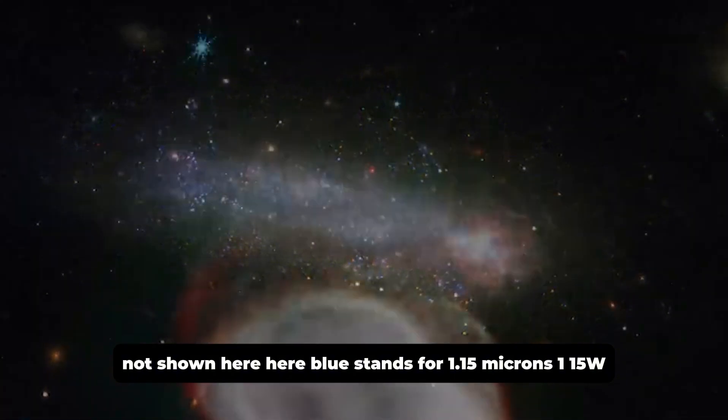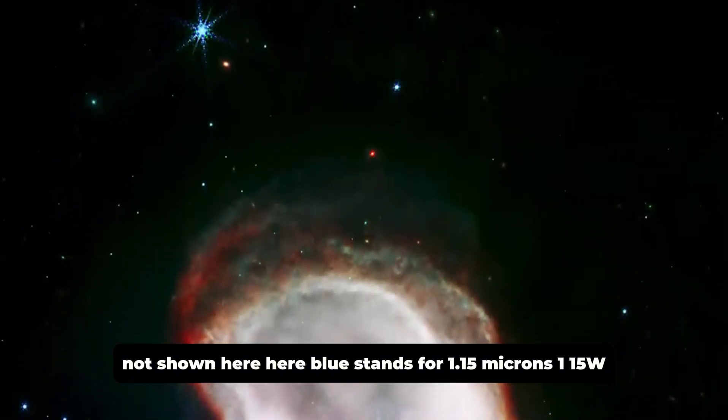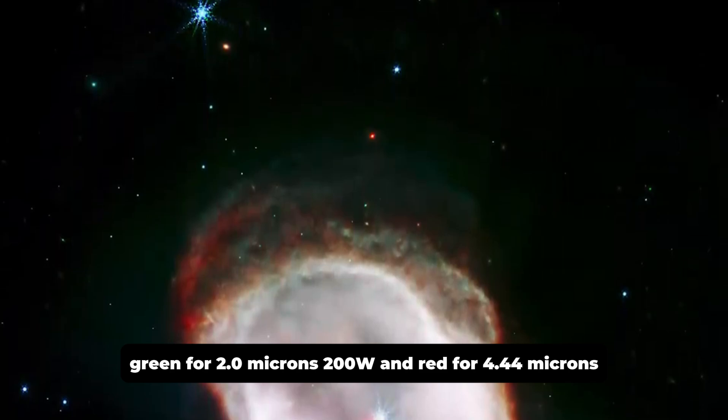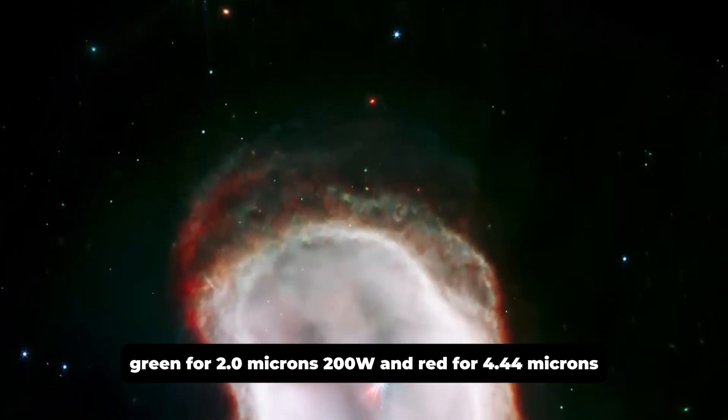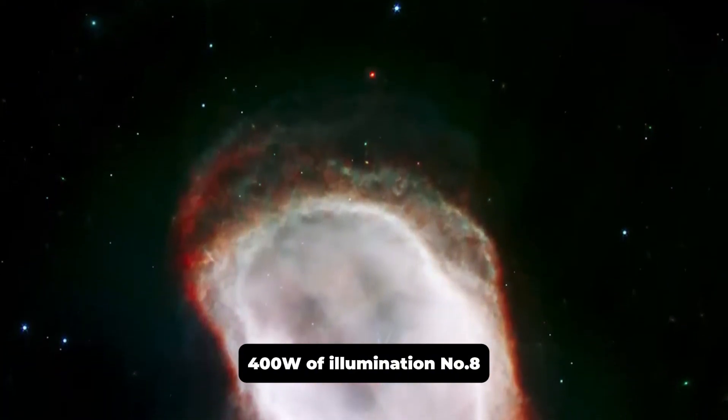Here, blue stands for 1.15 microns, 115W, green for 2.0 microns, 200W, and red for 4.44 microns, 400W, of illumination.